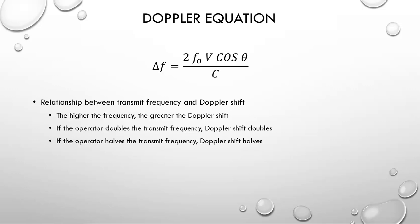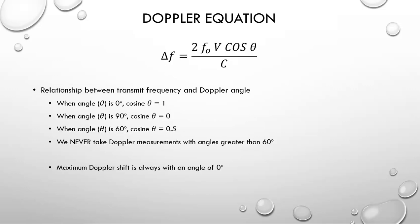The relationship between transmit frequency and Doppler angle: when the angle is 0°, cosine theta equals 1; when the angle is 90°, cosine theta equals 0; and when the angle is 60°, the cosine is exactly half. For historical reasons, we never take Doppler measurements with angles greater than 60 degrees. The maximum Doppler shift will always occur with an angle of 0 degrees.